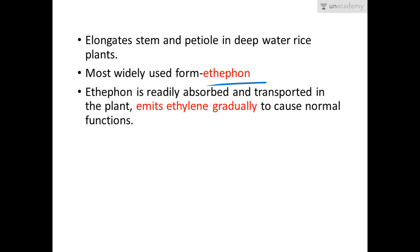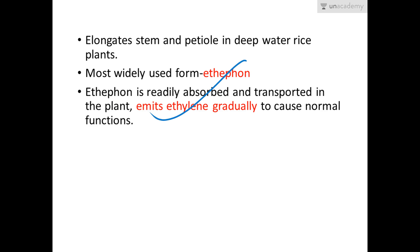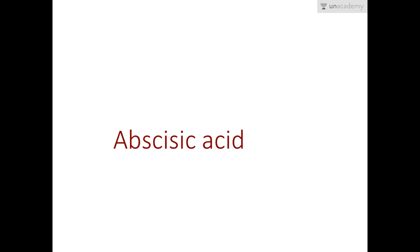The most widely used commercial form of ethylene is etephon. Etephon is a compound that is commercially sold and gradually releases ethylene when given to the plant. Ethylene is readily absorbed and transported in the plant, and etephon emits ethylene gradually to cause normal functions.